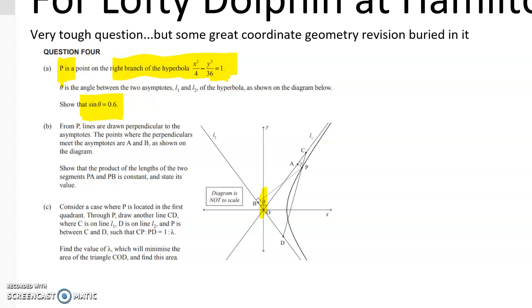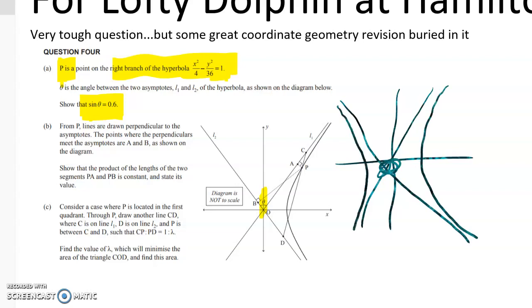Then the next part of the question gets quite a bit harder. We're told that we've got some lines that are perpendicular to the asymptotes. So the asymptotes of a hyperbola are these lines here. If you've done your conics revision, you'll know they're going to come from the equation of the hyperbola and they're going to be crucial for this question.